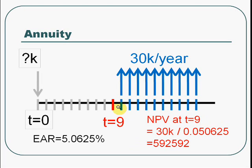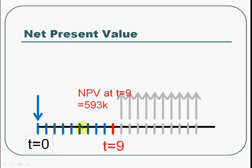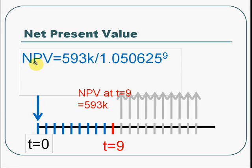Note that we are using the EAR in this equation. So now we know that all this cash flow is just equivalent to one single cash flow at T equal to 9 with value equal to $593k. Then the NPV equation gives us: 593k divided by 1 plus the rate to the power 9. The answer is $380k. So John has to invest $380k today in order to meet his plan.